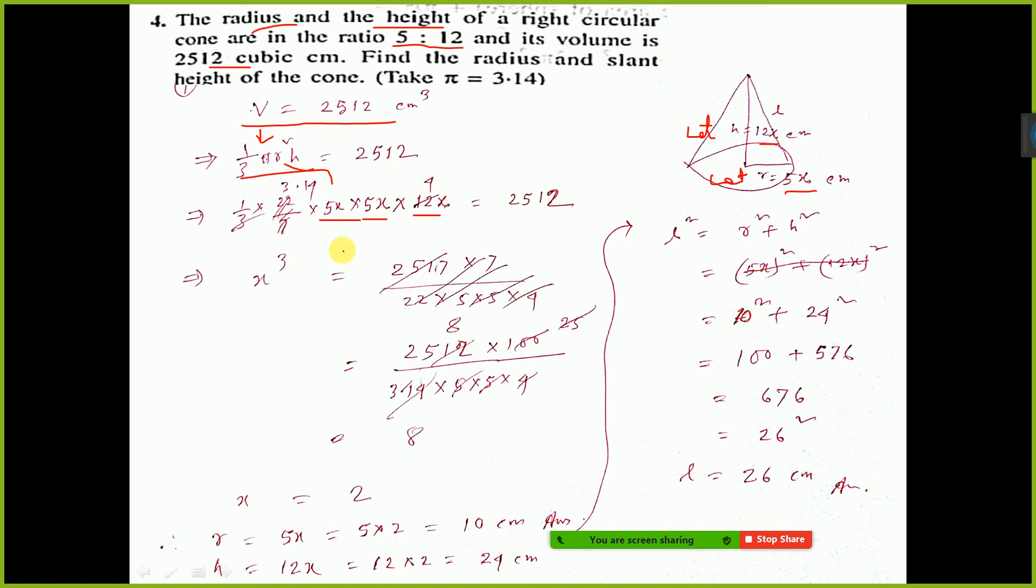Now, do cancellation and keeping x cube this side, the other thing you send right side. Now, after cancellation you will get only 8. 8 means 2 cube. Then x will be 2.